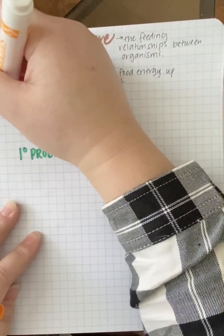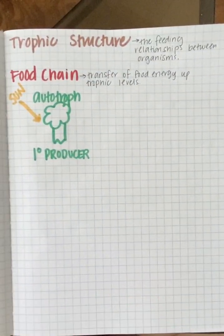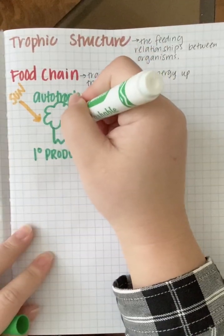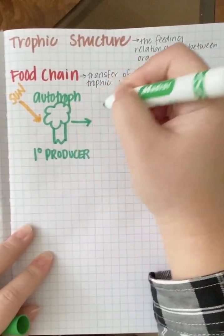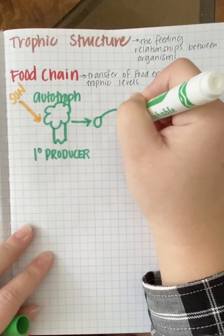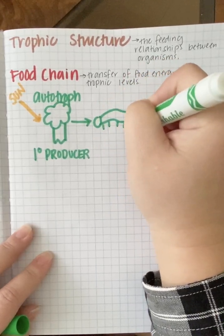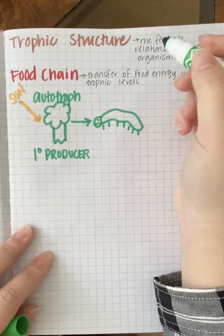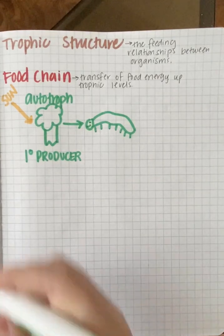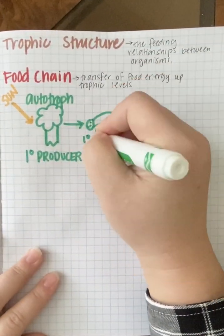Energy could also be chemical energy if we have a chemo-autotroph, but we need some input of energy incorporated into the organic molecules of our organism. If we think of something that feeds on plant life — I'll draw a caterpillar — organisms that consume our primary producers are known as our primary consumers.